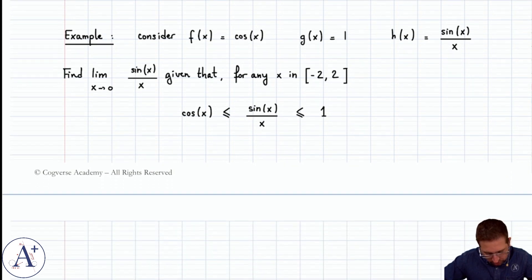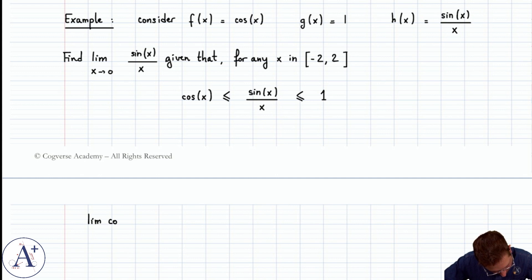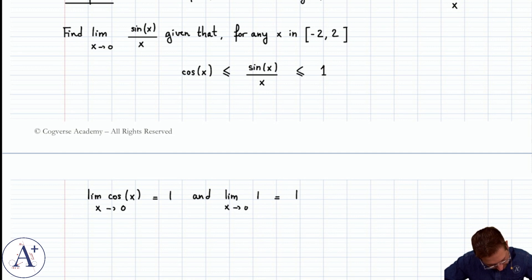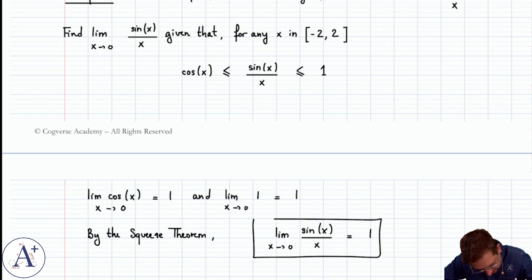What we would need to do is argue that the limit of cos(x) as x approaches 0 is equal to 1, and the limit as x approaches 0 of 1 is equal to 1. That's a bit overkill, but nonetheless true. And so by the squeeze theorem, the limit of sin(x)/x as x approaches 0 is equal to 1, which we might not have anticipated.